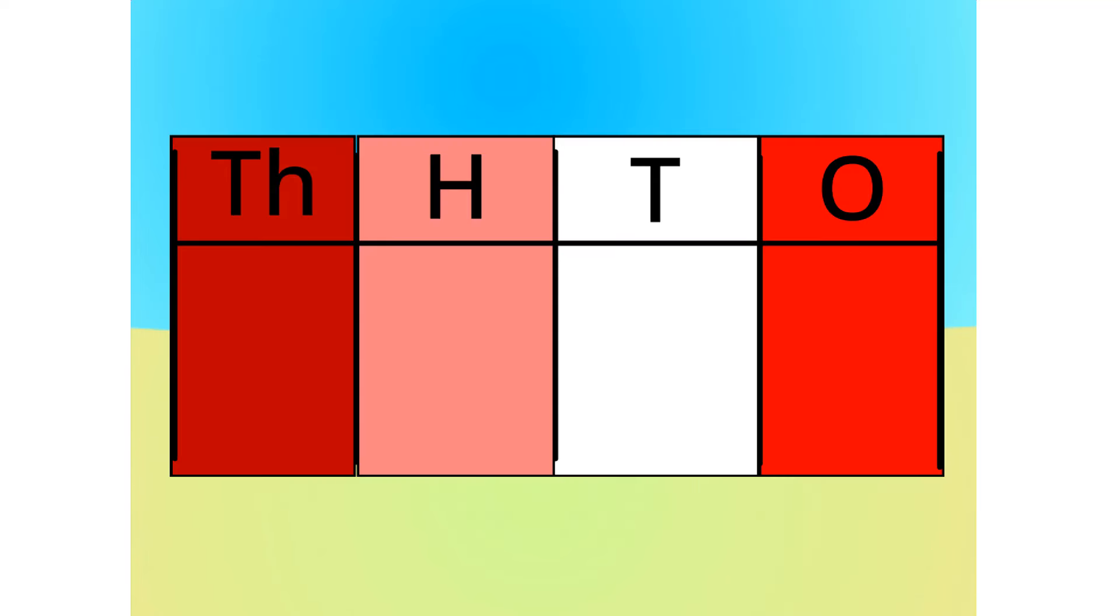Let me carry on with the first method. Do you notice anything with this table? Correct, the number multiplies by 10 each time it goes left one column. Because it multiplies by 10 each time, we call this system base 10.